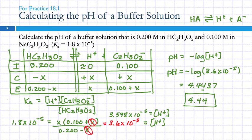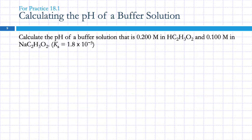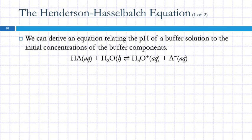ICE tables are really important in this class — this is the third chapter with ICE tables. We can actually derive an equation that relates the pH of a buffer solution to the initial concentrations of the components, the weak acid and its conjugate base. This only works when X is small, but X is small most of the time, so this is a useful equation. It's known as the Henderson-Hasselbalch equation.